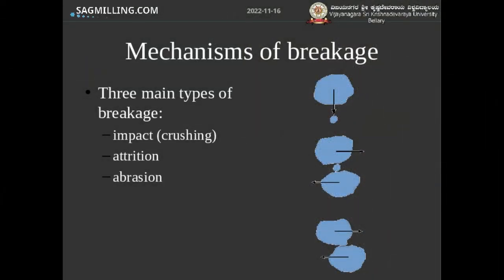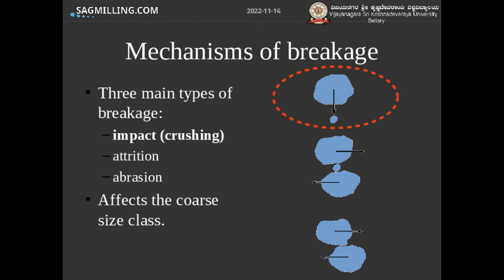Before we get into a discussion of the milling equipment, let's run through some of the mechanisms of breakage so that we can try to tune a particular mill type to a particular ore characteristic. The ways that an ore can break are basically divided into three main categories. The coarsest category we would typically call either impact or crushing, and it involves very large particles being dropped from high distances as the mill tumbles. Those large rocks will either impact other rocks breaking them, or they will hit against the charge breaking themselves.